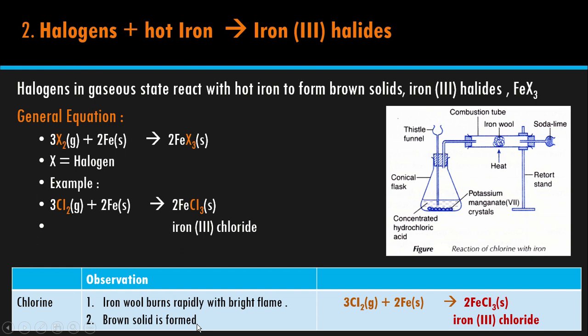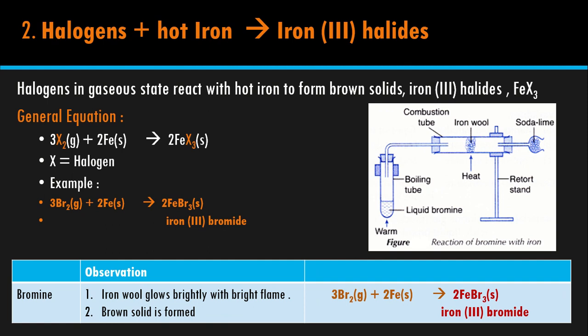Bromine kurang reactive, jadi iron wool akan glow sahaja — dia tak burns, dia cuma berbara. Glow with bright flame tetapi api dia terang juga, cuma dia glow, dia tak terbakar — itu menunjukkan dia kurang reactive compare dengan chlorine. Product dia pun sama, akan produce brown solid. Dalam equation, kita ganti saja Cl2 dengan Br2, dan Fe, so produk dia FeBr3 — iron(III) bromide. Kalau chlorine jadi chloride tadi, bromine jadi bromide.